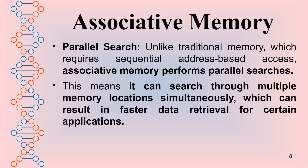The main advantage of associative memory is that it searches content in a parallel manner. It can search through multiple memory locations simultaneously, which results in faster data retrieval. That's why we can retrieve data very quickly.